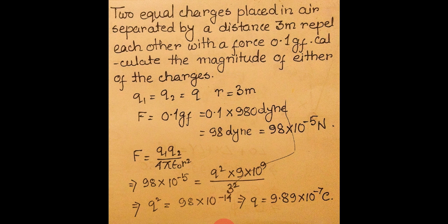This force equals the repulsive force between the two equal charges separated by 3 meters: F = q^2 × 9 × 10^9 / 3^2 = 98 × 10^-5. Solving: q^2 = 98 × 10^-4, giving q = 9.89 × 10^-7 Coulomb. If the nature of the charge is asked, then q = ±9.89 × 10^-7 Coulomb — either both positive or both negative.